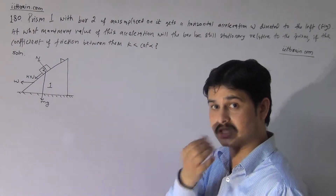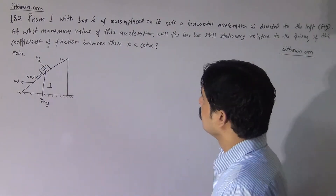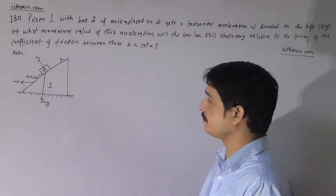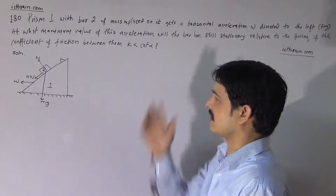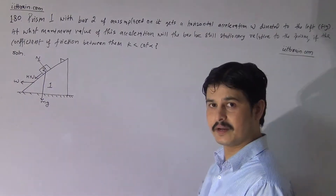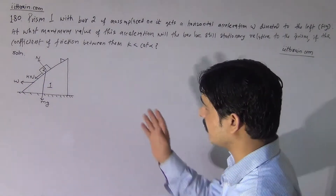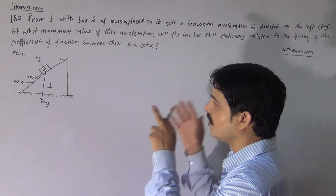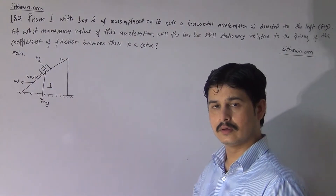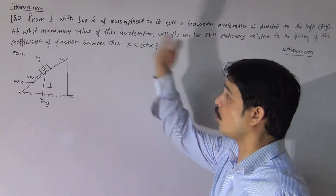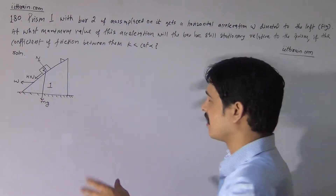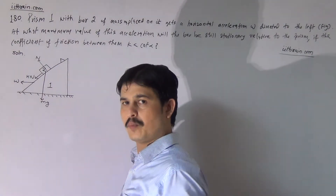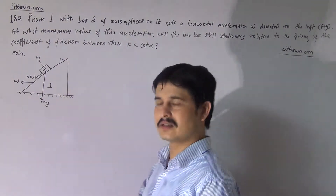The question asks for the maximum acceleration such that the bar will be maintained in the rest condition. If the friction value is minimum, the bar will be maintained at rest. If the friction value is greater, the bar will not move and will remain at rest.